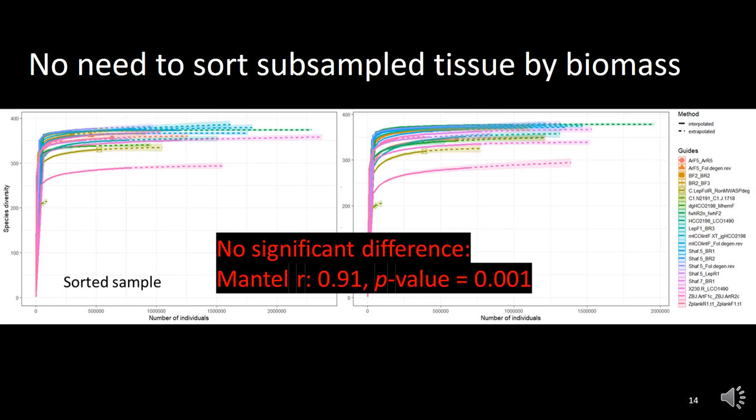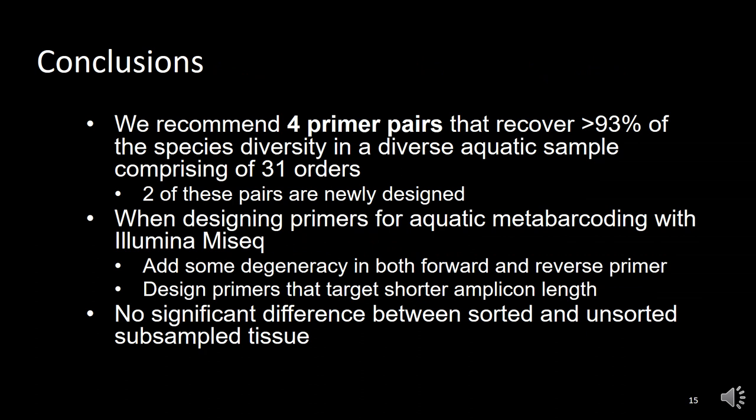And that's great news — it's basically going to save us a lot of time in these kinds of experiments. In conclusion, what we recommend based on these results is that there are four primer pairs that recover more than 93% of the diversity in such a diverse aquatic sample, and two of these primer pairs were newly designed. When designing primers for aquatic metabarcoding with Illumina MiSeq, you want to add degeneracy in both forward and reverse primers, and you may be better off targeting shorter amplicon length. In terms of sorting versus not sorting, we found no significant difference between the two samples, so you may be better off not sorting the subsample tissue.